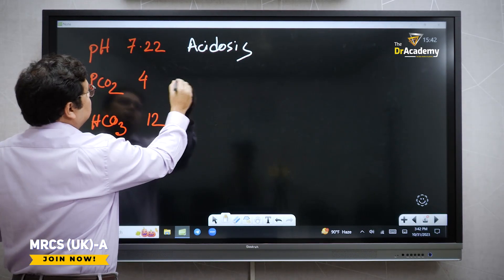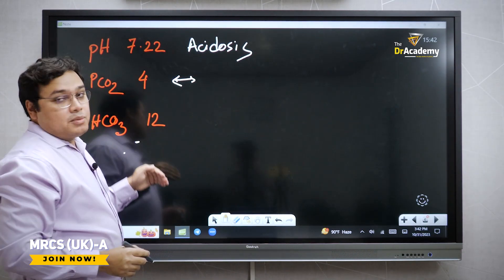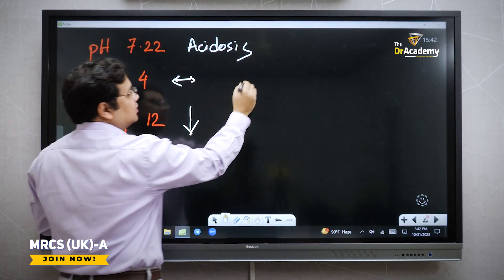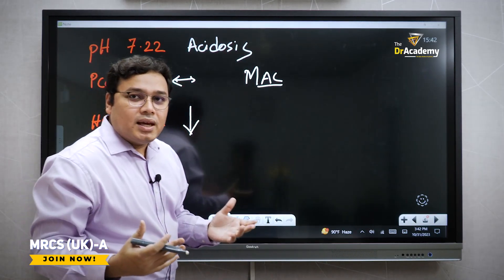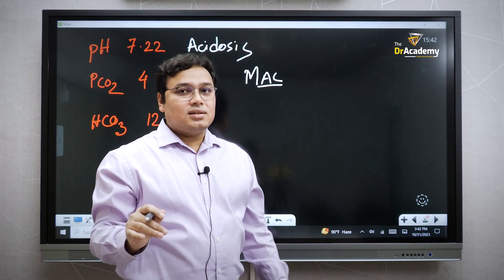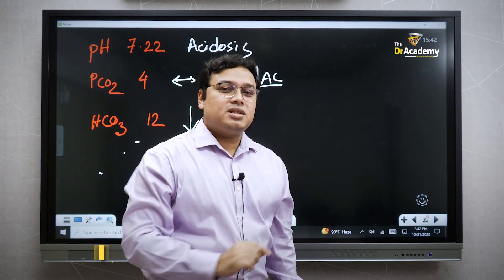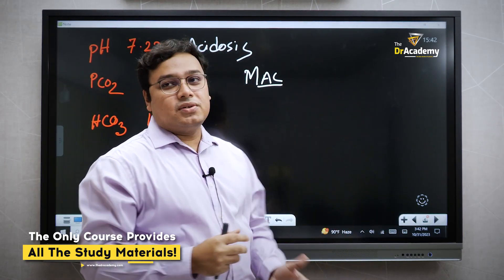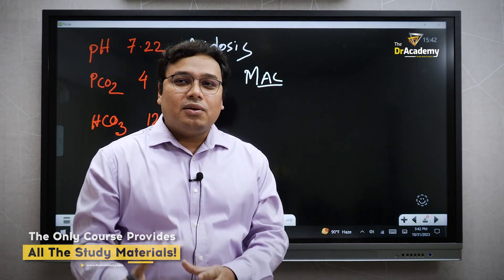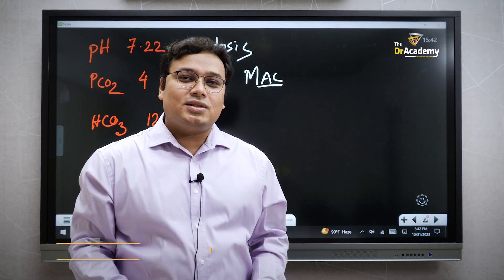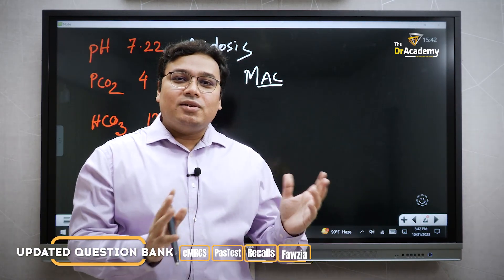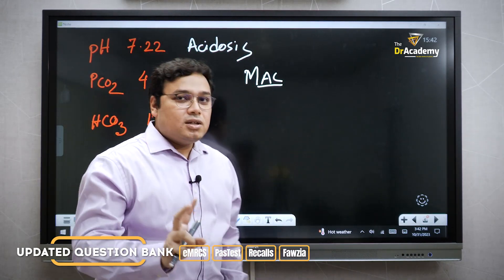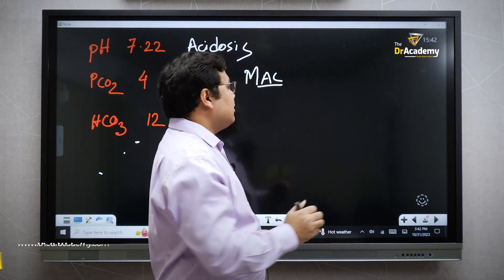Scenario three: pH 7.22 — this is acidosis. CO2 is normal, and bicarbonate is getting lower. This is metabolic acidosis. When can it happen? Any kind of sepsis, cardiogenic shock, abdominal sepsis, salicylate poisoning, methanol poisoning, aspirin poisoning, diabetic ketoacidosis, and diarrhea are common causes. There are many causes of metabolic acidosis.